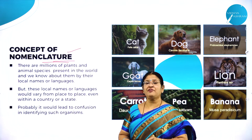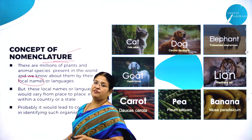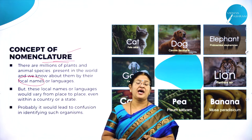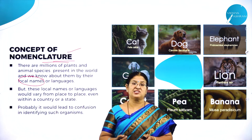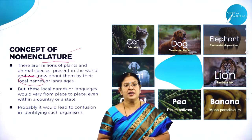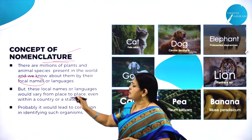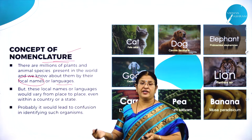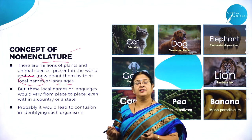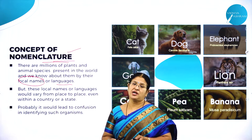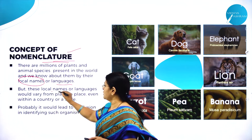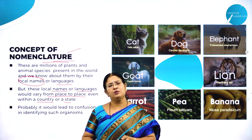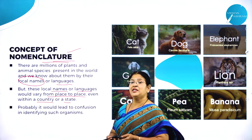It is very difficult for us to identify all these organisms. We identify them by their names — we have local names. For example, here in Karnataka we speak Kannada, so many words are in the local language. Every organism has its own identity marked by its name. But the local names vary from state to state, which may lead to confusion.